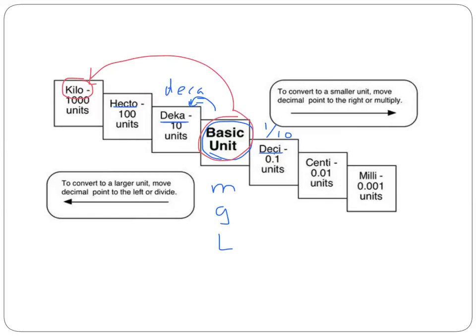Going the other way, as I said, we have deci, which is one tenth or ten decimeters into one meter. Centi is one one-hundredth or a hundred centimeters in one meter, and milli is a thousandth or one thousand millimeters in one meter. So again on this way, the prefixes that we most frequently deal with are centi and milli.